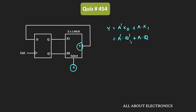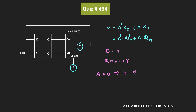Let's say Q is equal to Qn, that is the present output of the flip-flop. This Y output is connected back to the D input, so D is equal to Y. In the D flip-flop, the output is same as the input, meaning the next state Qn+1 is the same as the Y output. So whenever A is equal to 0, then Y is equal to Qn', which means Qn+1 is the complement of Qn.